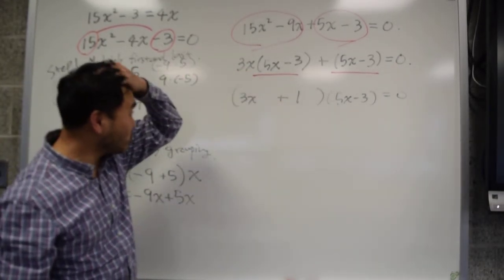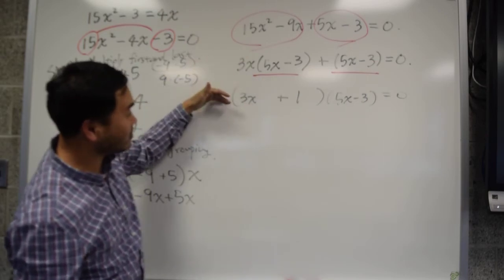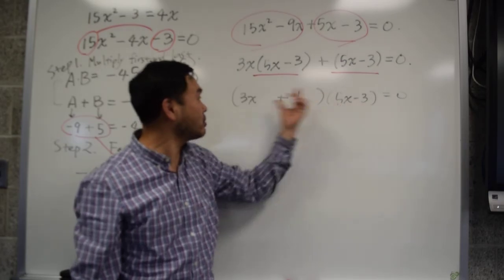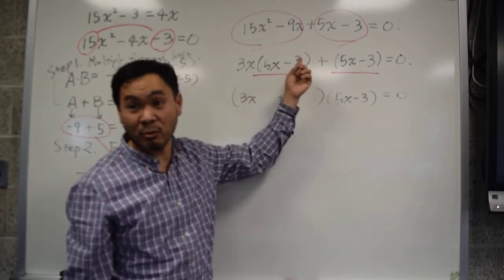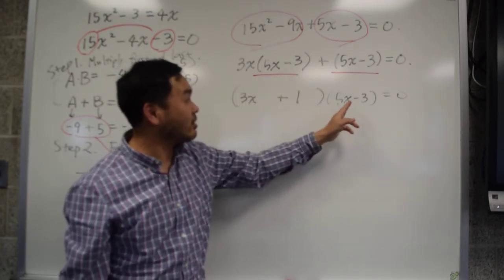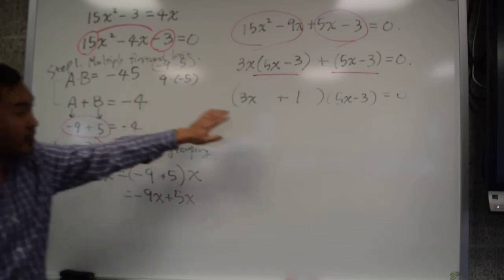And what I advise you to do is every time you transfer one to the next, one to the next, always check whether you're doing it correctly or not by multiplying them out and see if it works, right? If you multiply this out, it's the same thing. If you expanded this, you're going to see that it's exactly the same as what you started with. This is the same thing as this.